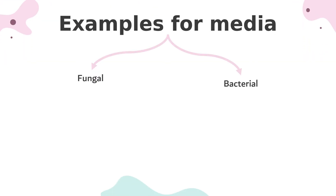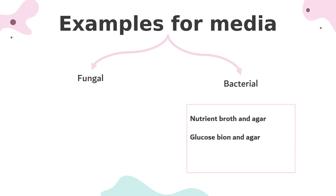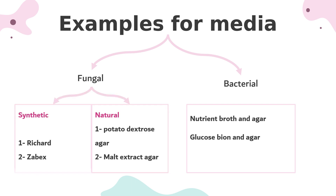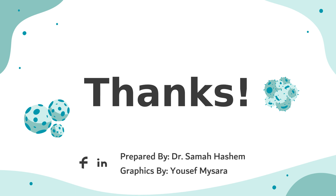Examples of nutrient media include two types: fungal media, which supports the growth of fungi, and bacterial media, which supports the growth of bacteria — such as nutrient peptone agar and glucose peptone agar. Fungal media include natural media like potato dextrose agar and malt extract agar, and synthetic ones such as Richard's and Czapek-Dox media.